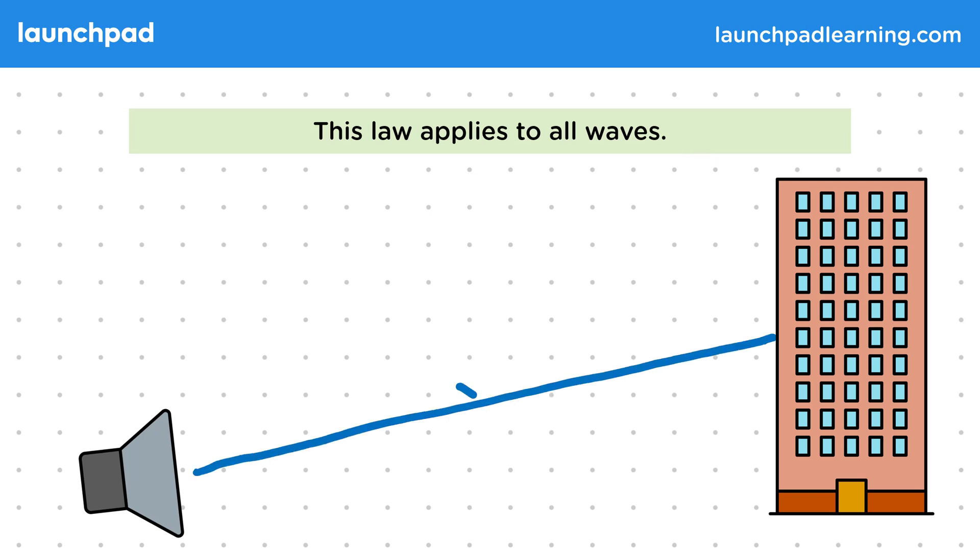We can draw a line representing the path of a sound wave to the building and then another line for the path of the reflected wave or echo. Again, if we draw in the normal to the surface, in this case the line perpendicular to the wall of the building,